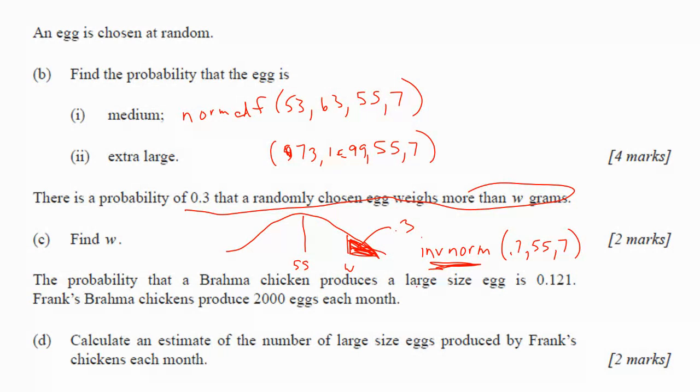And so the probability that Brahma chicken produces a large egg is 0.121. Frank's Brahma chicken produces 2,000. Calculate an estimate of the number. So this is an expected value when you're estimating the number. Well, you have 2,000 eggs, and the probability of a large-sized egg is 0.121. Multiply those together. So you can do those calculations. Pause and do those calculations.